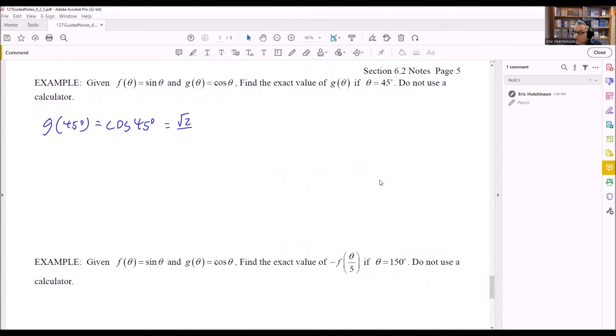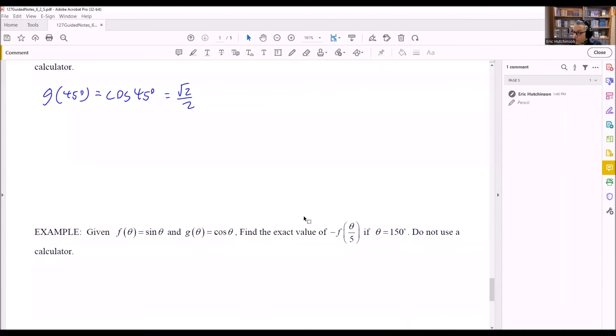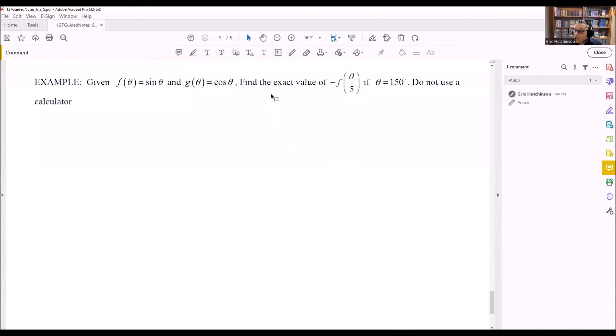Now let's take a look at this next one. We have the same functions that are given here, but we have something a little bit different this time. We want to find the exact value, this type of -f(θ/5). Okay, so the first thing we want to do is to put the 150 in for theta. So 150° divided by 5, we're going to begin by doing that.